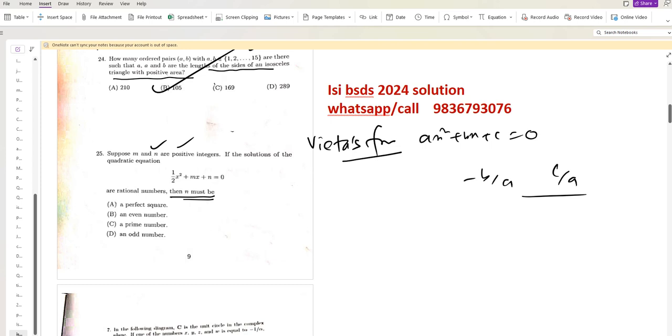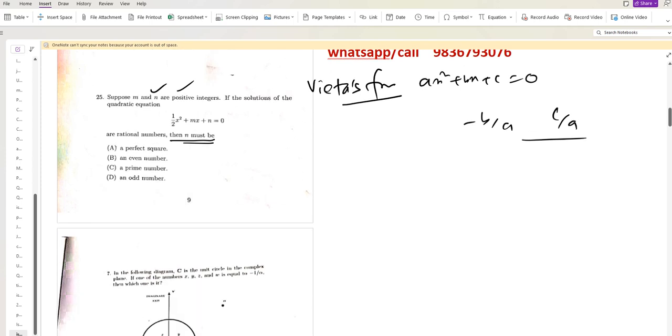So sum of this thing x1 plus x2 is minus n by half, so minus 2n. That is the sum of the roots, x1 plus x2. And x1 into x2 is n by 1 by 2, that is 2n. So minus 2n and 2n.